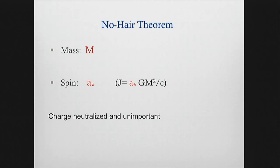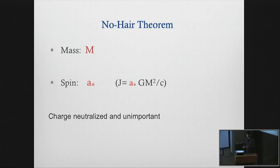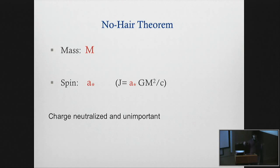The no-hair theorem tells us that a black hole is completely describable the same way that an electron or a proton - a fundamental particle - is described by just three quantities: its mass, its spin, and its charge. However, because black holes that we study are astrophysical systems that live in a plasma, charge neutralizes. And so effectively charge is unimportant, and we're left with just spinning and massive black holes where these two parameters completely describe those objects.